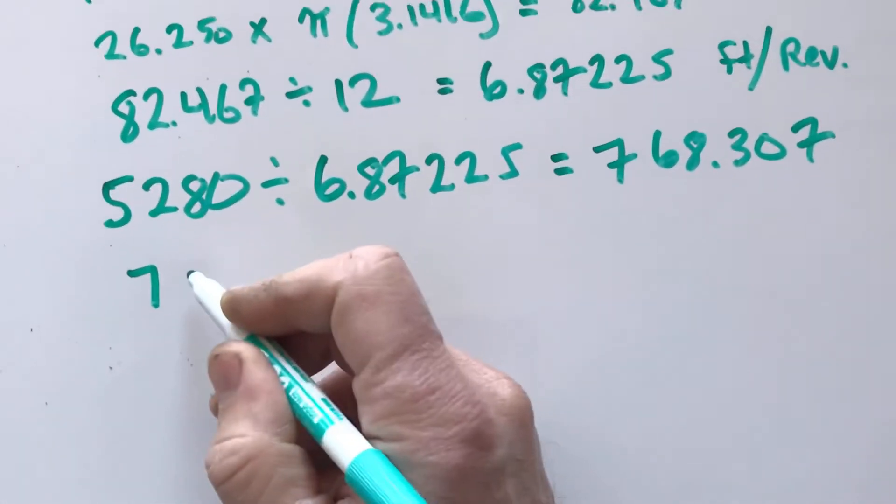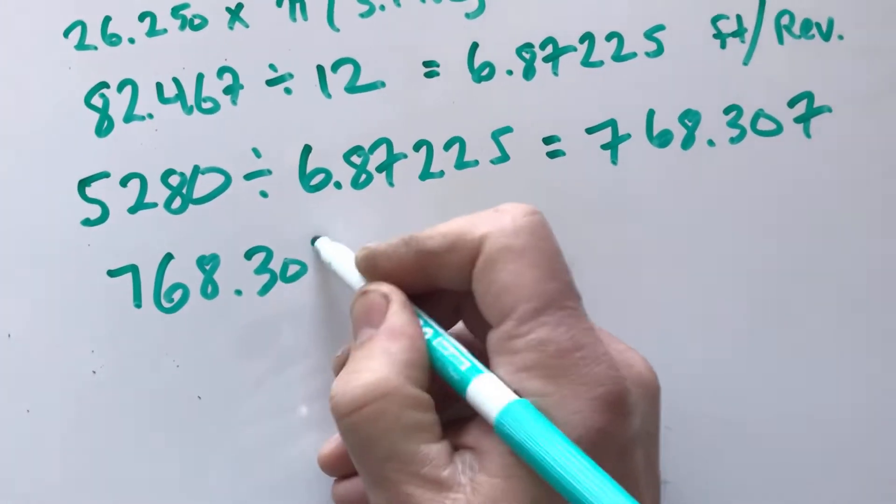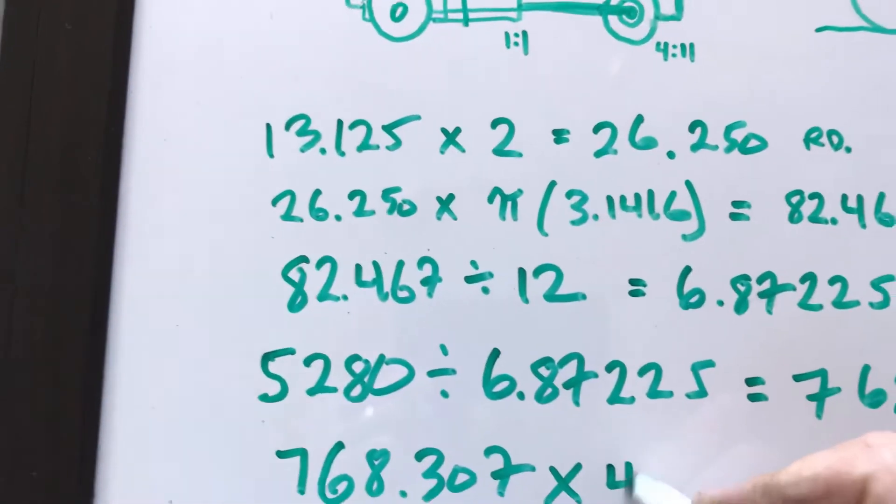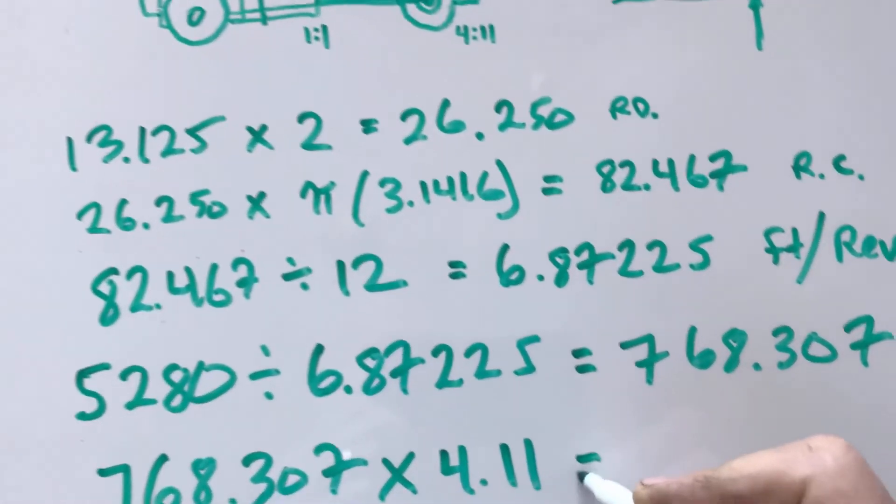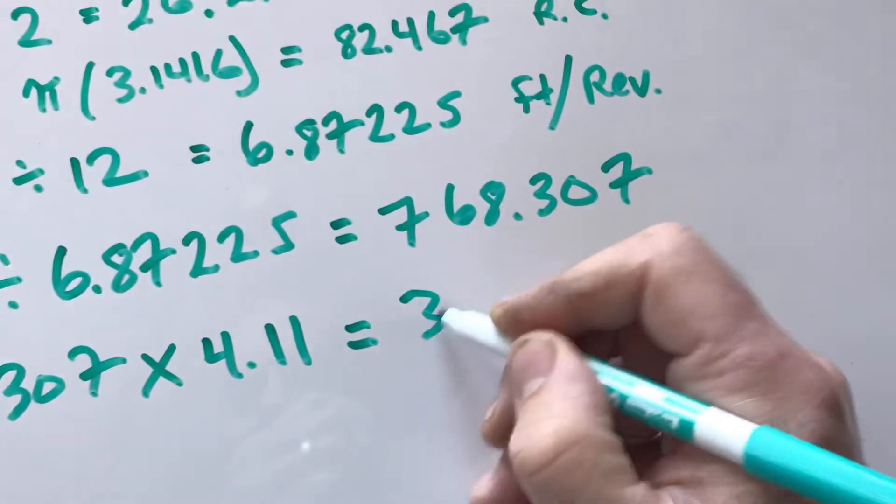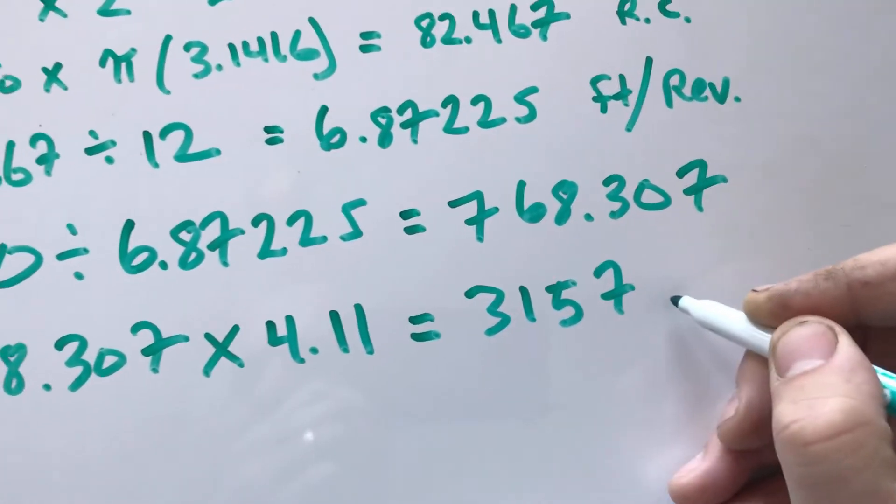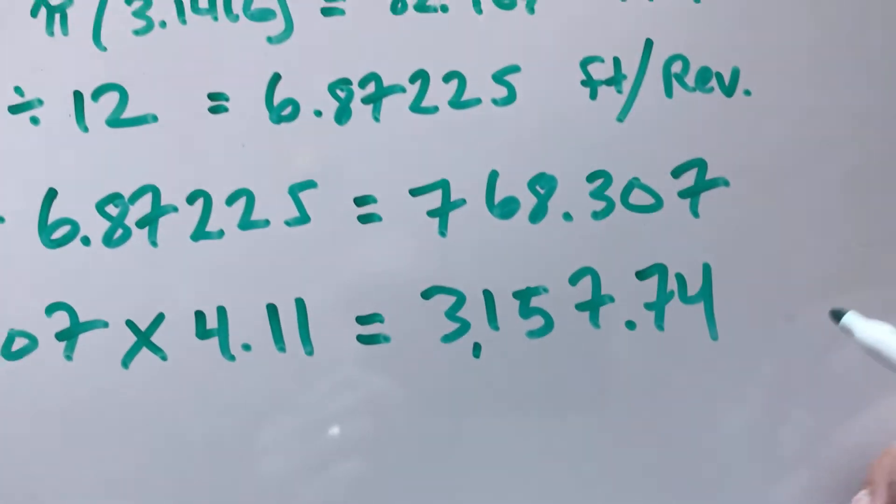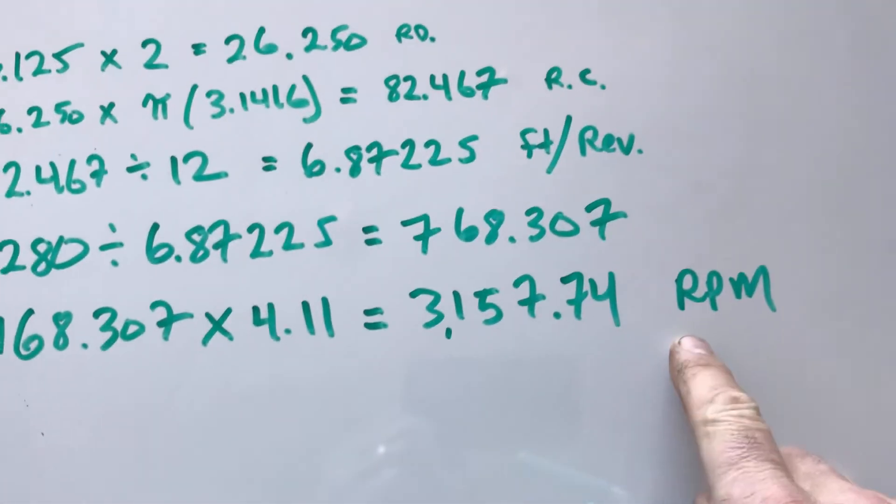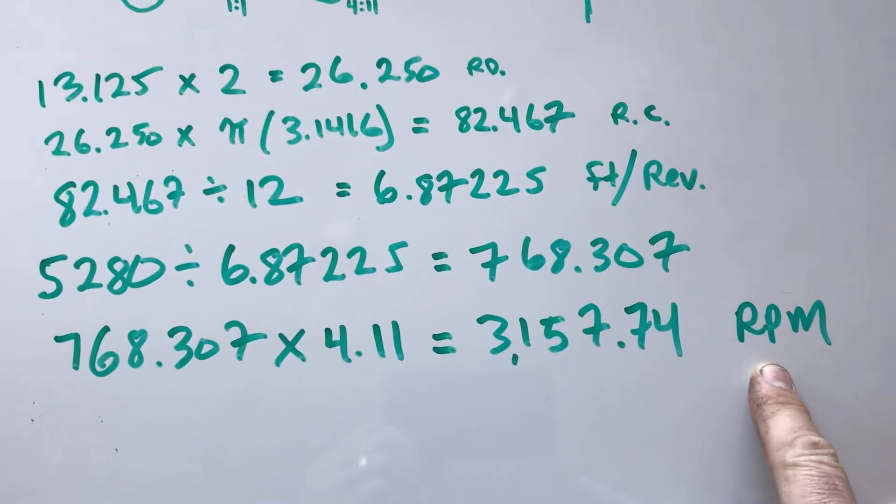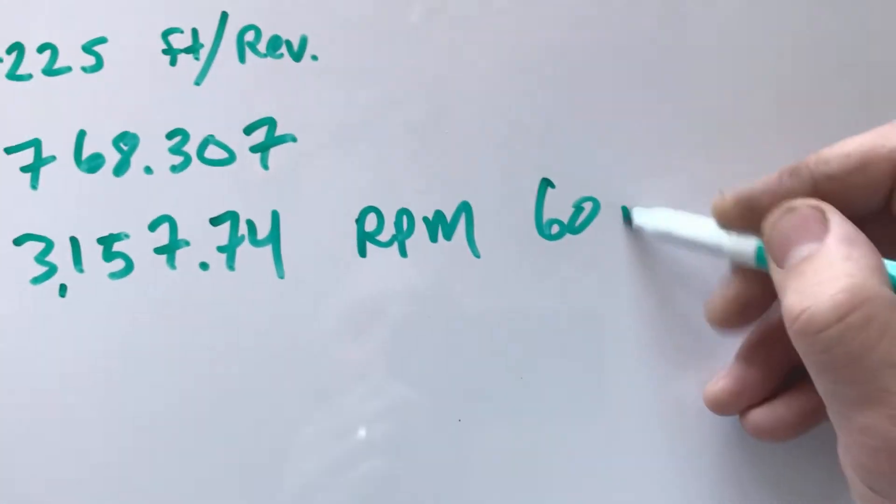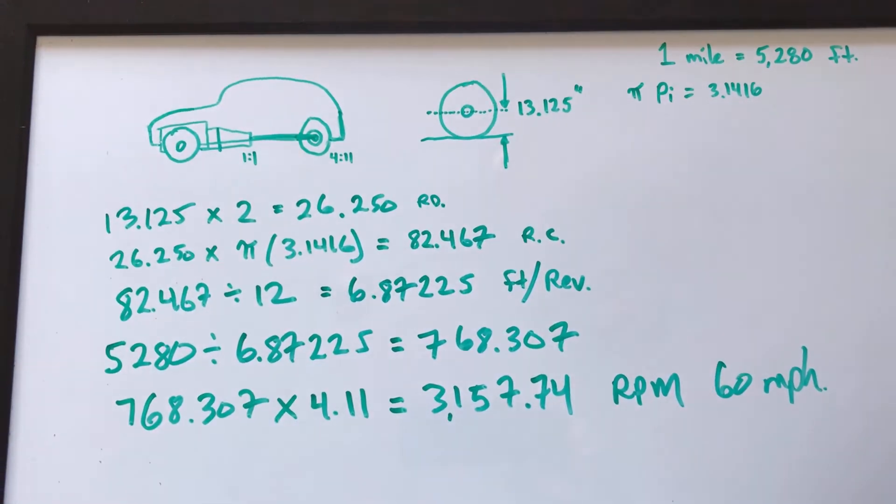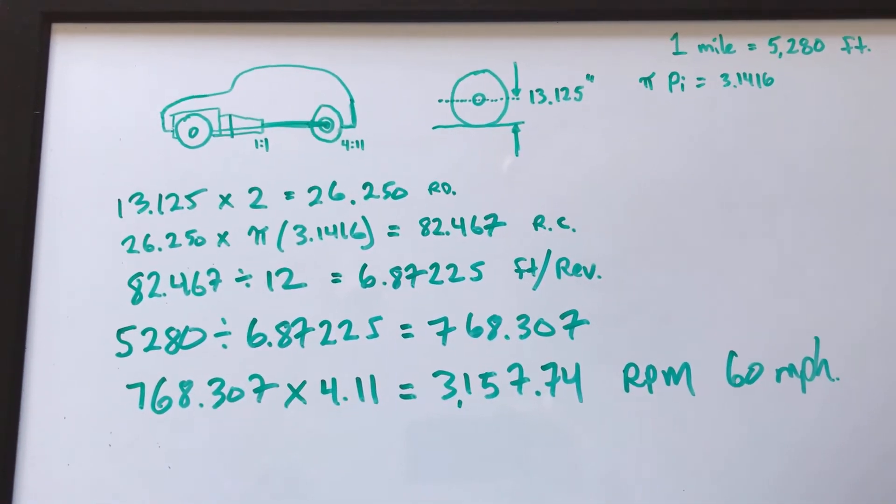Next we take the tire revolution 768.307, we times it by my rear end differential which is 4.11, equals 3,157.74. That's 3,157 revolutions per minute. That's how fast my engine is turning at 60 miles per hour. So my little car here is going to be cranking out pretty good at 3,157 RPM at 60 miles an hour.